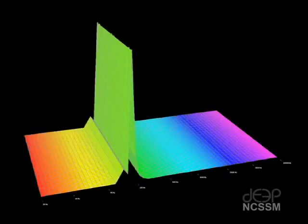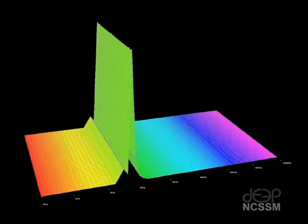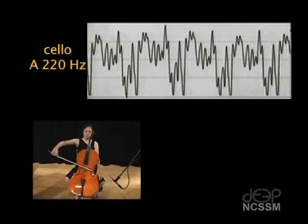If we look at this sine wave in 3D, we see that the only frequency that is represented is 220. There is no amplitude at any other frequency. Now let's look at the wave that is generated by a cello.